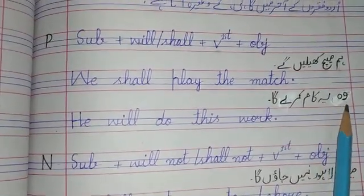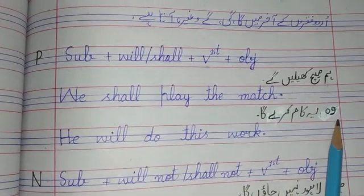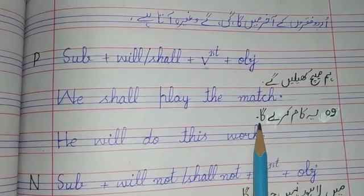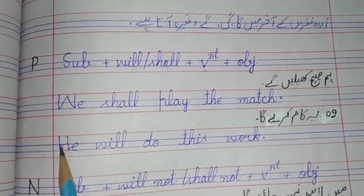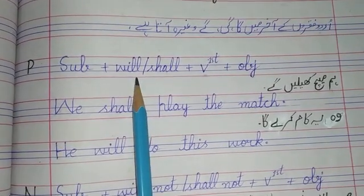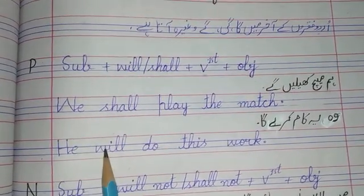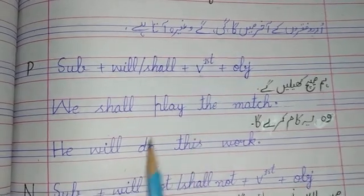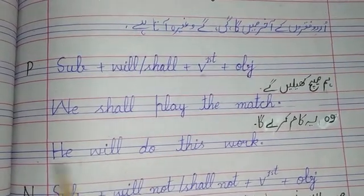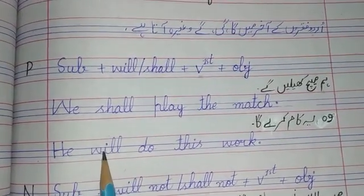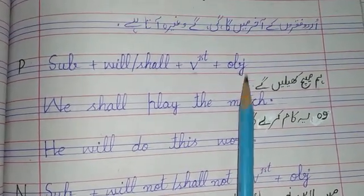The second example is: 'He will do this work.' He is our subject. With 'he,' which helping verb do we use? Will. He will. The verb for 'do' is 'do.' He will do this work. 'This work' is our object.